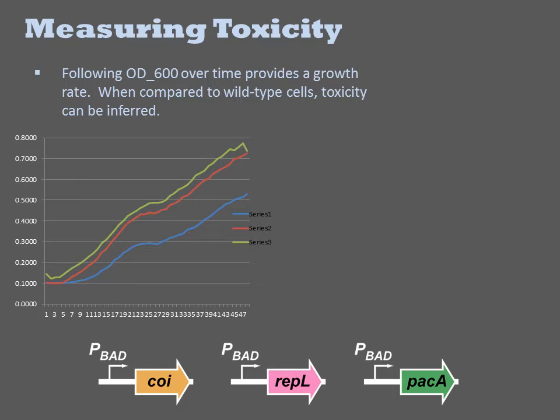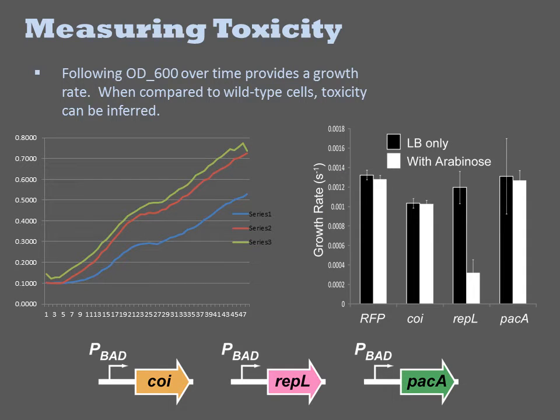In this experiment, we individually place three different protein components of a genetic device under the PBAD promoter and monitor the cell's growth as a function of time with and without arabinose induction. An examination of the growth rate shows that RepL is clearly toxic to the cell upon induction, and this knowledge is useful for debugging the circuit.